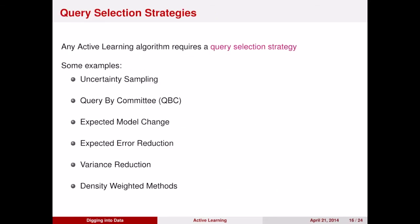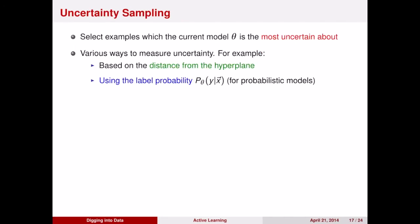This is called a query selection strategy. There are many examples, and we'll talk about a few of them. First up, uncertainty sampling. So in this case, what you want to do is you have some model that will represent with theta, and you want to choose the points for which you're most uncertain. So what does uncertainty mean? There are many ways that you can quantify this in the context of a machine learning algorithm. If you're doing something like a support vector machine, your uncertainty could be the distance from the hyperplane. For a probabilistic model, the uncertainty might be the probability of a class given your example. So let's take a look at these in a little bit more detail.